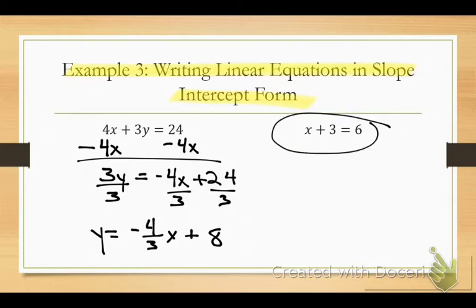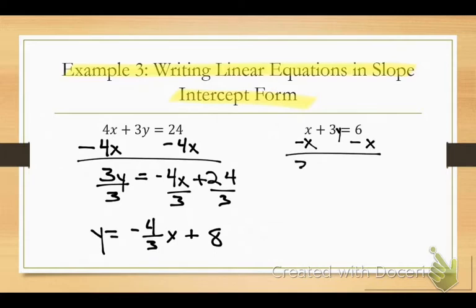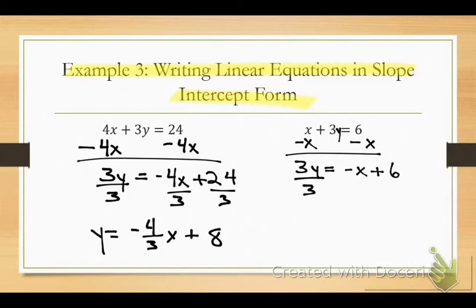Now do this one: x plus 3y equals 6. Go ahead and solve it. To solve for y, what do I do first? Minus x from both sides. 3y equals — what comes first? Negative x. Plus 6. Now what do I do across the whole equation? Divide by 3. How do I do negative x divided by 3? Put a 1 in front of it: negative 1/3 x.